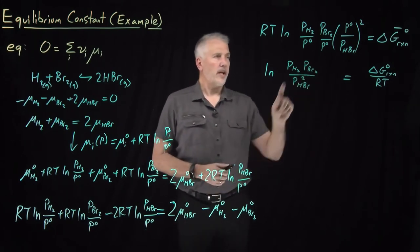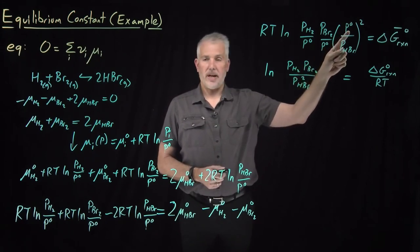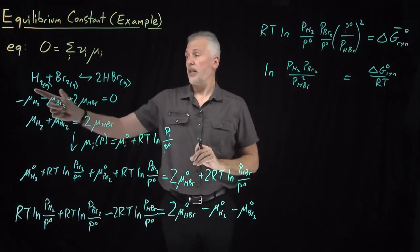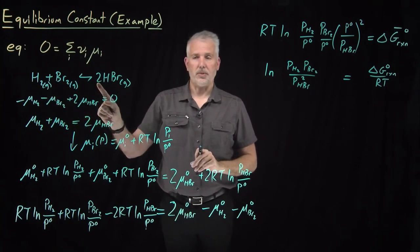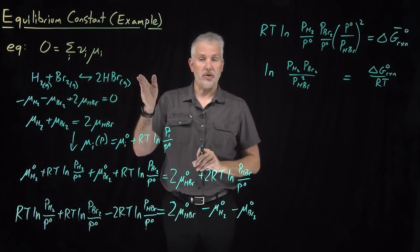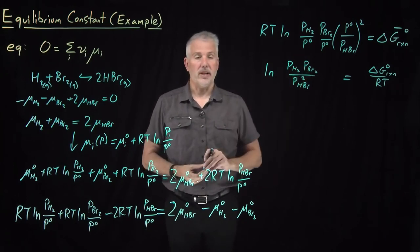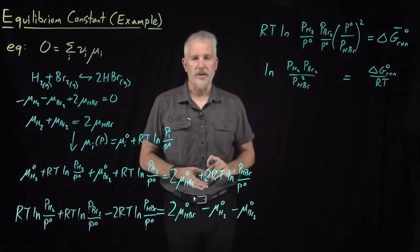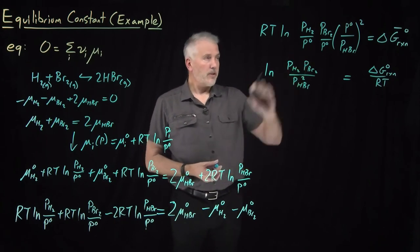A word of caution: that cancellation of the P° terms happened only because of the coincidence that there are two molecules on the reactant side and exactly two molecules on the product side. If the reaction had generated or consumed a net number of molecules, that cancellation wouldn't happen — and that's one source of complication we'll encounter with more complicated problems. But for the moment, the P° terms all canceled.